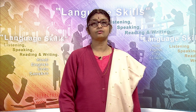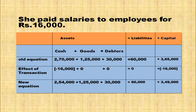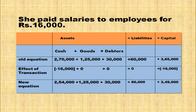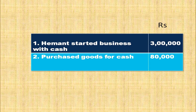Paid salaries to employees rupees 16,000. When salaries are paid, cash is going from the business and from the capital. Deduct 16,000 from cash column and 16,000 from capital column. New equation: cash 2,54,000 + goods 1,25,000 + debtors 30,000 = 4,09,000. Liabilities 60,000 + capital 3,49,000 = 4,09,000. Accounting equation is satisfied.